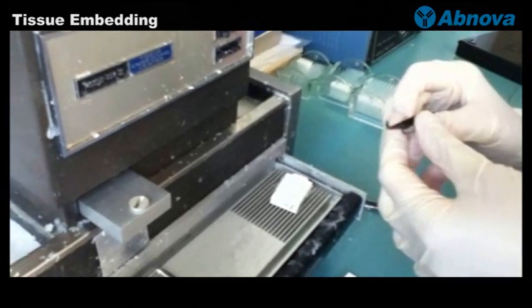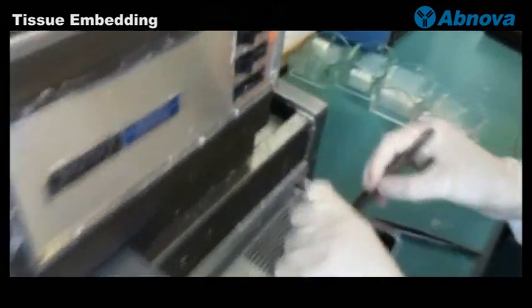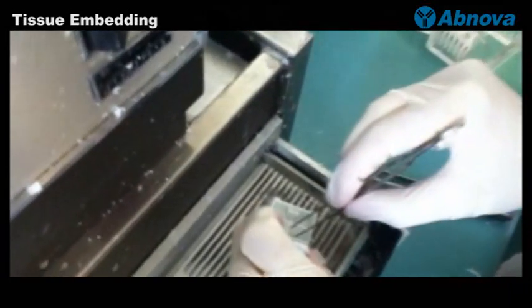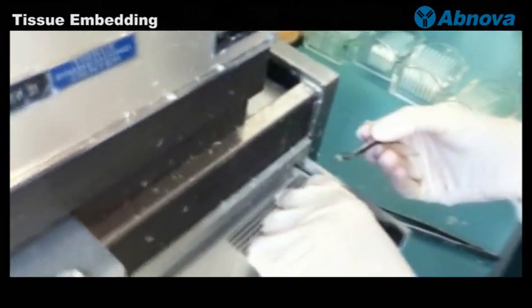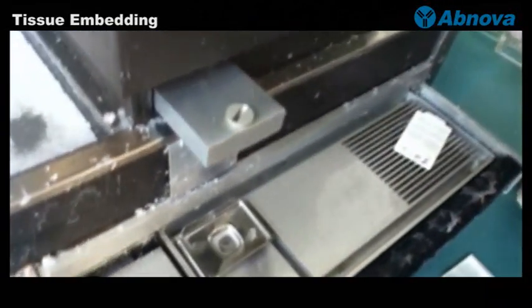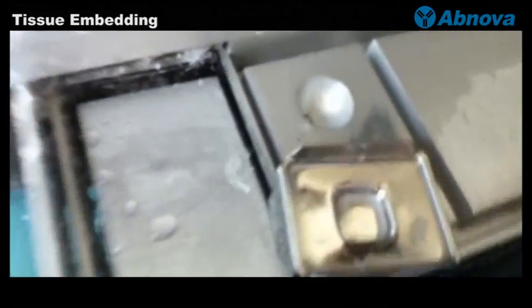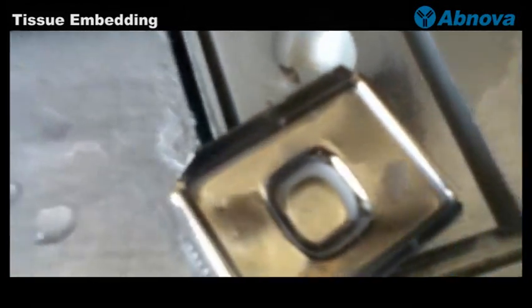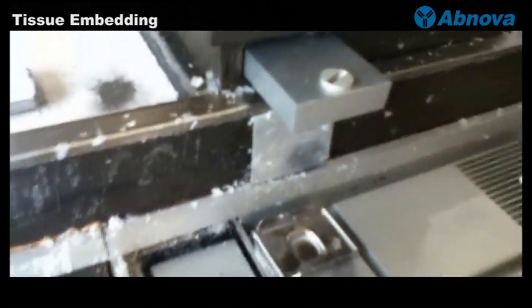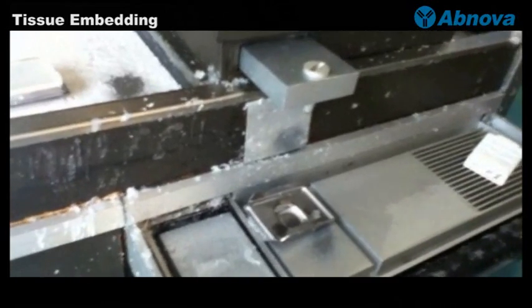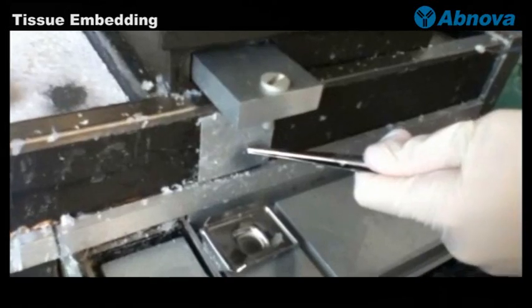You can remove the lid from the cassette and take out the bone chips or tissue that has been processed. Pre-warm all the metal cassettes so that the paraffin inside the cassette will be melted, and you can put a little bit of molten paraffin into the metal mold.